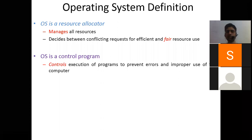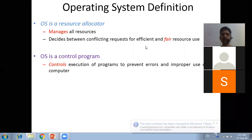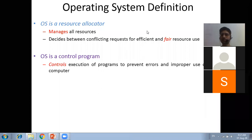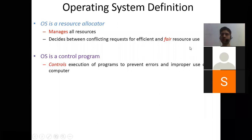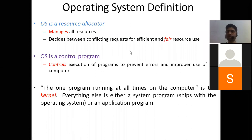The operating system is a resource allocator - it manages all resources and decides between conflicting requests for efficient and fair resource use. The one program that runs all the time whenever you turn on your computer system is the soul of the operating system - this is called the kernel. The kernel is the crux of your operating system. It runs all the time whenever you open your computer system. Everything else is either a system program or an application program.